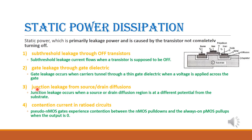The third cause is junction leakage from source or drain diffusions. The source or drain acts as a PN junction, and when that junction is in reverse bias condition there should be no current flow, but there will be some leakage current — called junction leakage. The fourth cause is contention current in ratioed circuits. In an inverter, when PMOS is on, NMOS is off, and vice versa. But when both transistors are on simultaneously, there is a flow of current from supply to ground, called contention current, which causes a leakage.